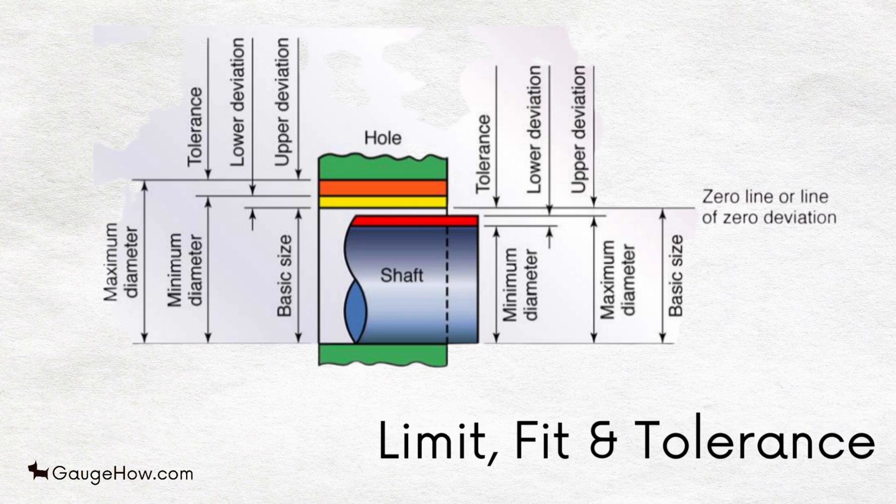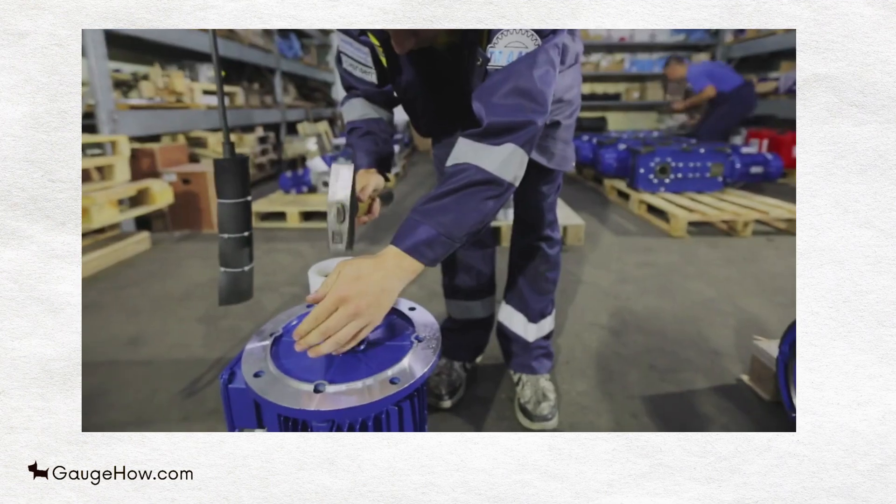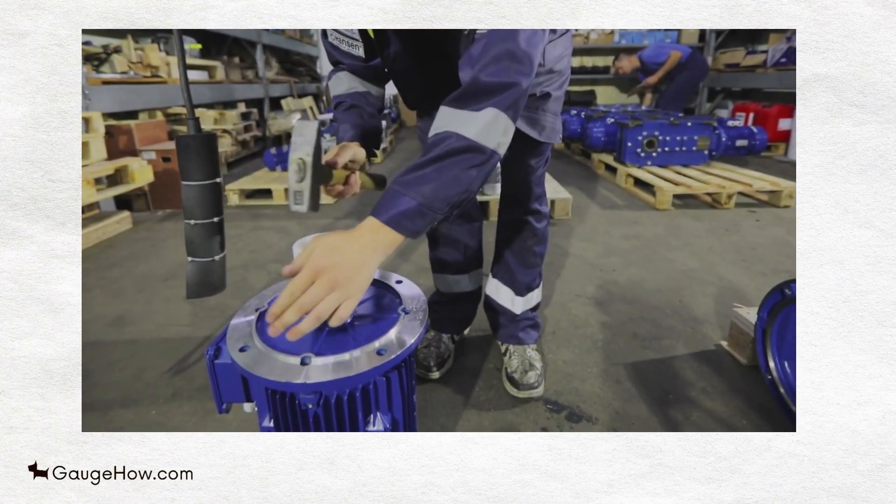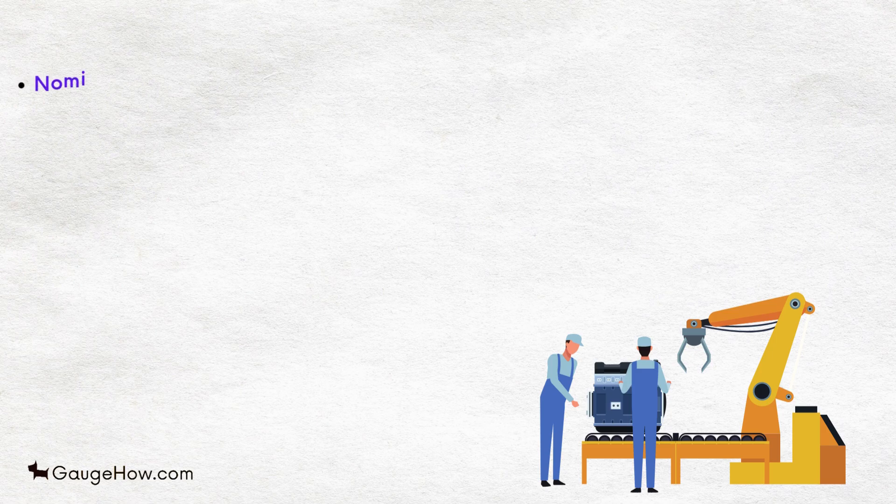A large number of parts of exactly the same dimension cannot be produced commercially. The actual dimension is always a little larger or smaller than the desired ones.